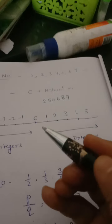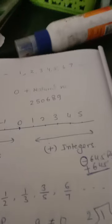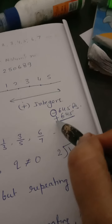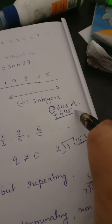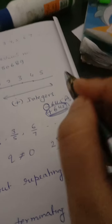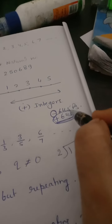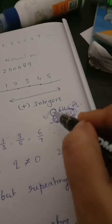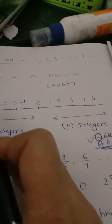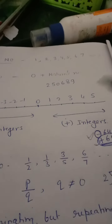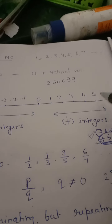Now we come to integers. Suppose I want to show my loss or gain in numerical form. I can show my gain by putting a positive sign before any number — like I write plus sign before 645, that means I gained 645 rupees. If I write minus sign before any number, it will show my loss. So if we mark minus sign before any number it becomes a negative integer, and if we write positive sign it becomes a positive integer. So these are our integers.